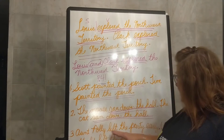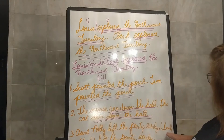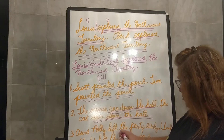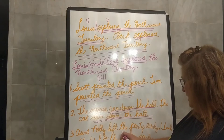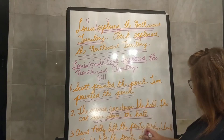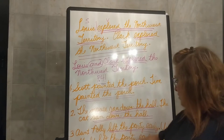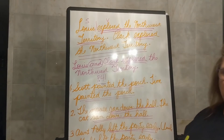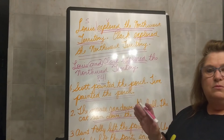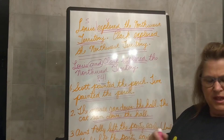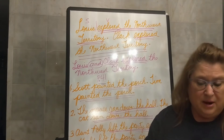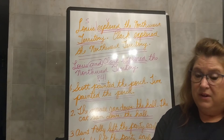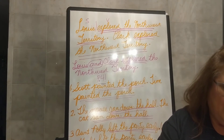And then number three: Aunt Polly left the party early. Uncle Gerald left the party early. We have two exact complete predicates — left the party early, left the party early. Combine those subjects and make a smooth sentence. Be sure your sentences begin with a capital letter and end with a period. You can pause the video and finish up that exercise.